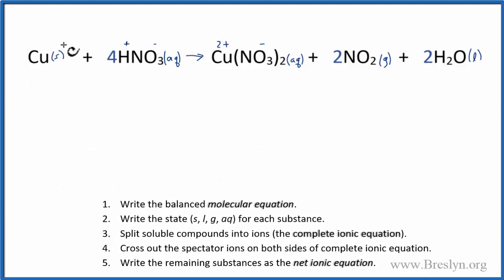We have our copper, which is a solid, I'll write the states in when we're done, I won't write that now. So we have copper, Cu, plus 4 H plus ions, so 4 H plus, plus 4 of the nitrate ions, 4 of those NO3 minus.